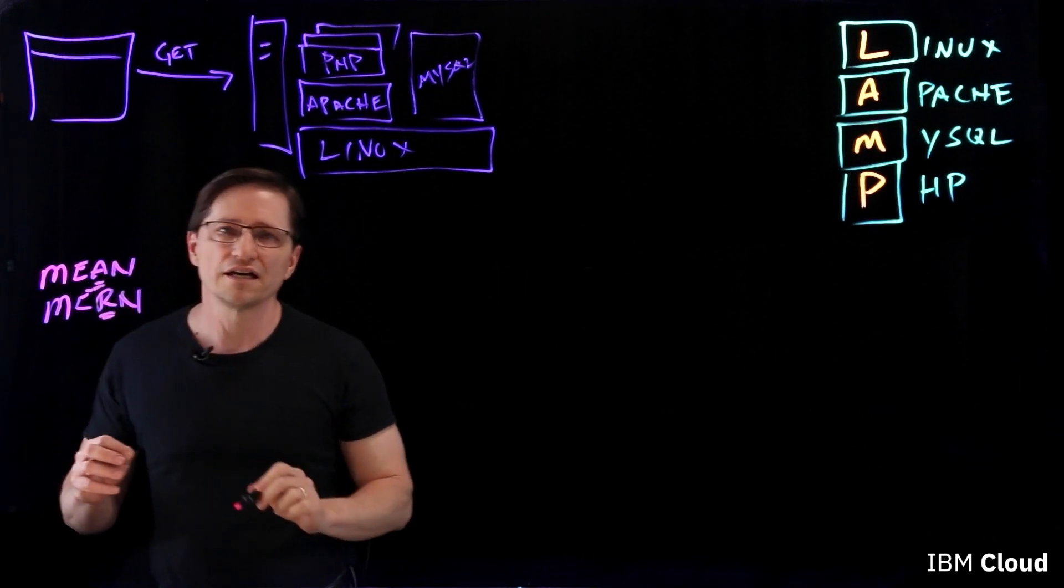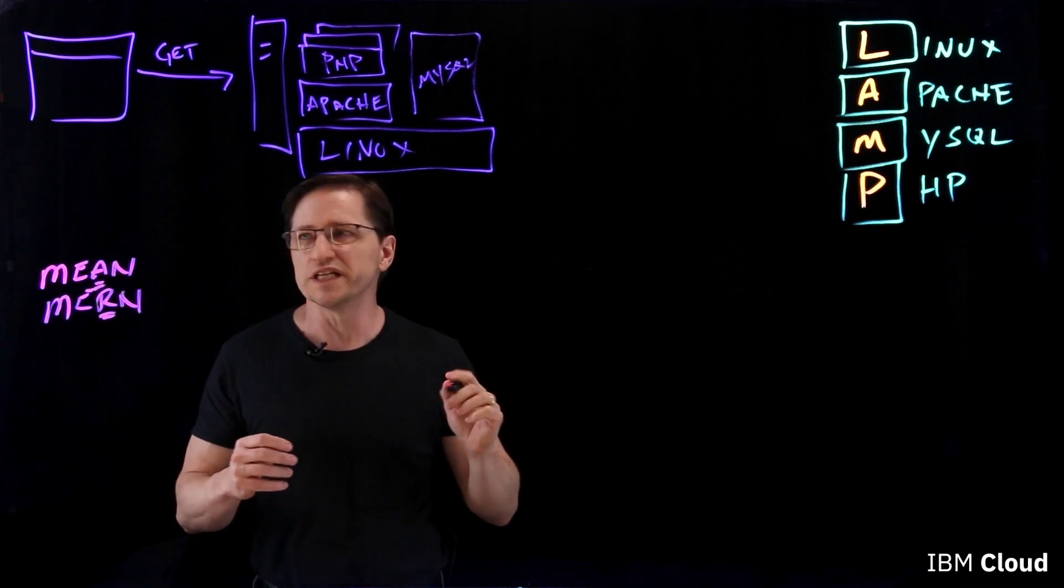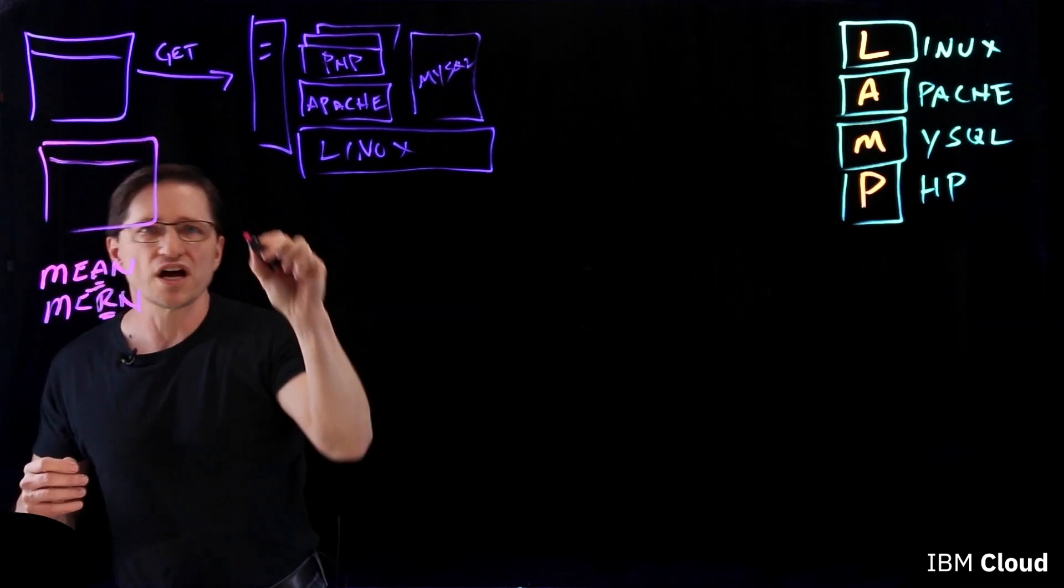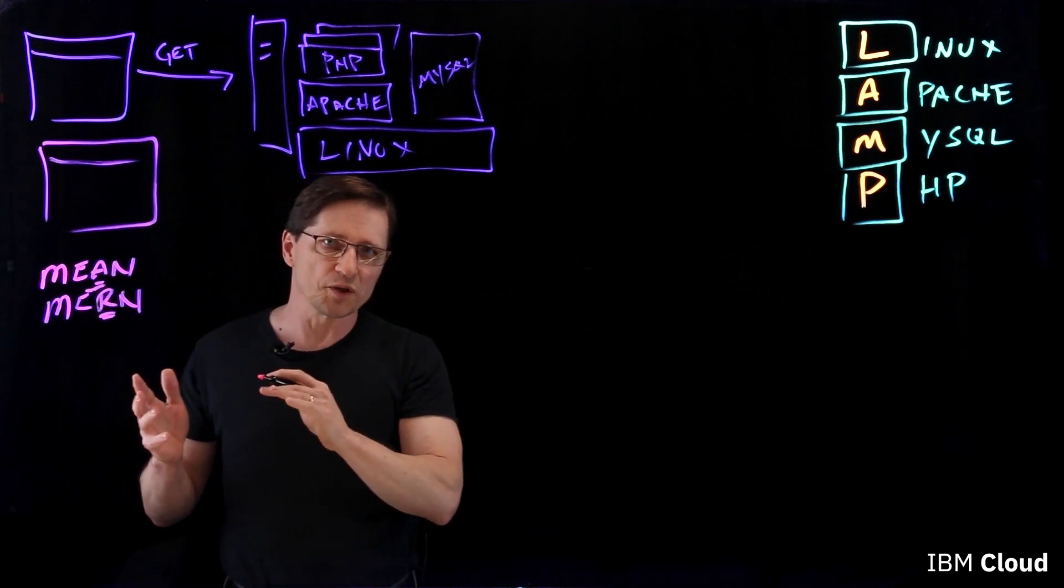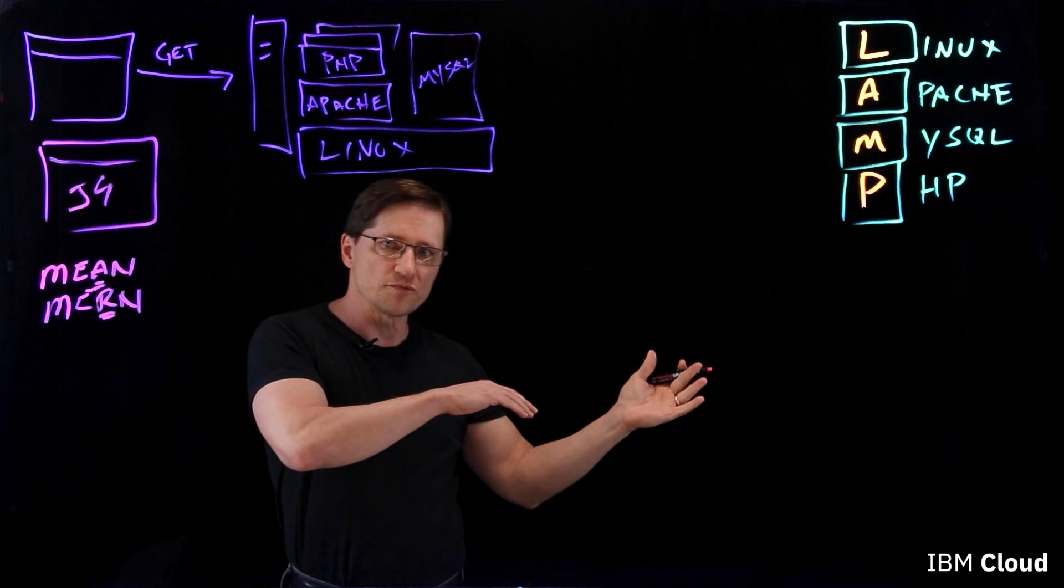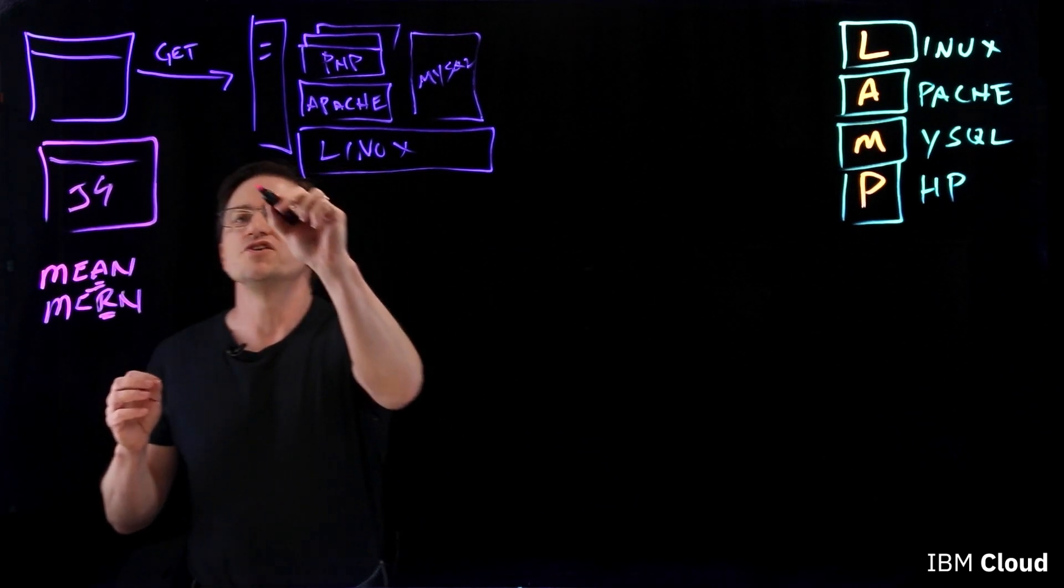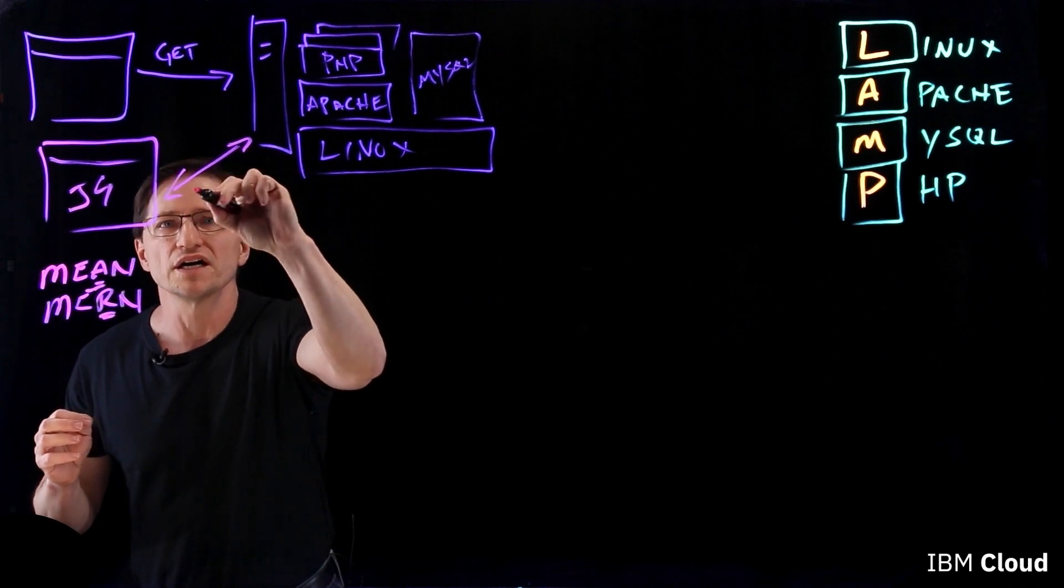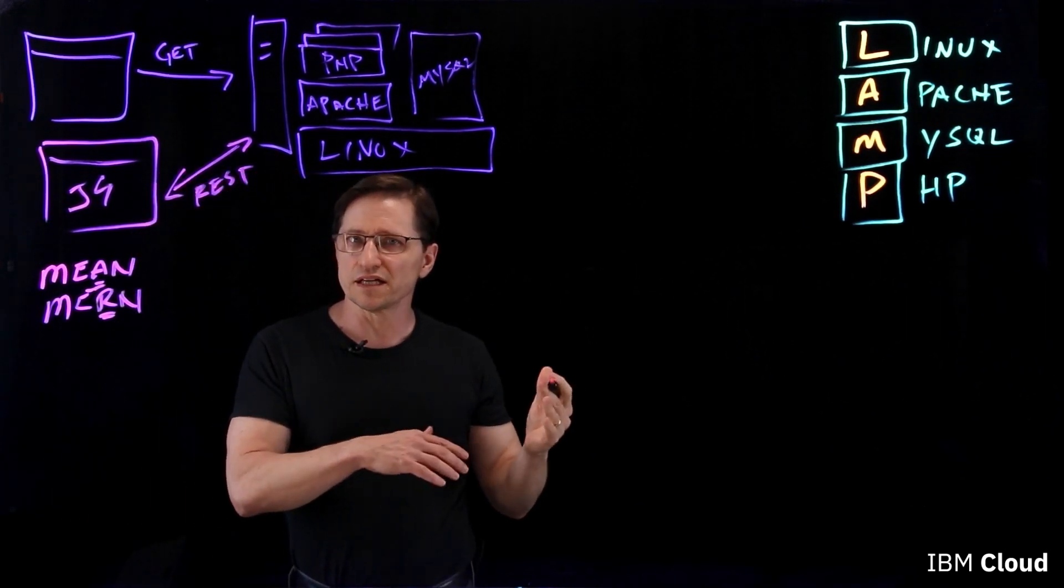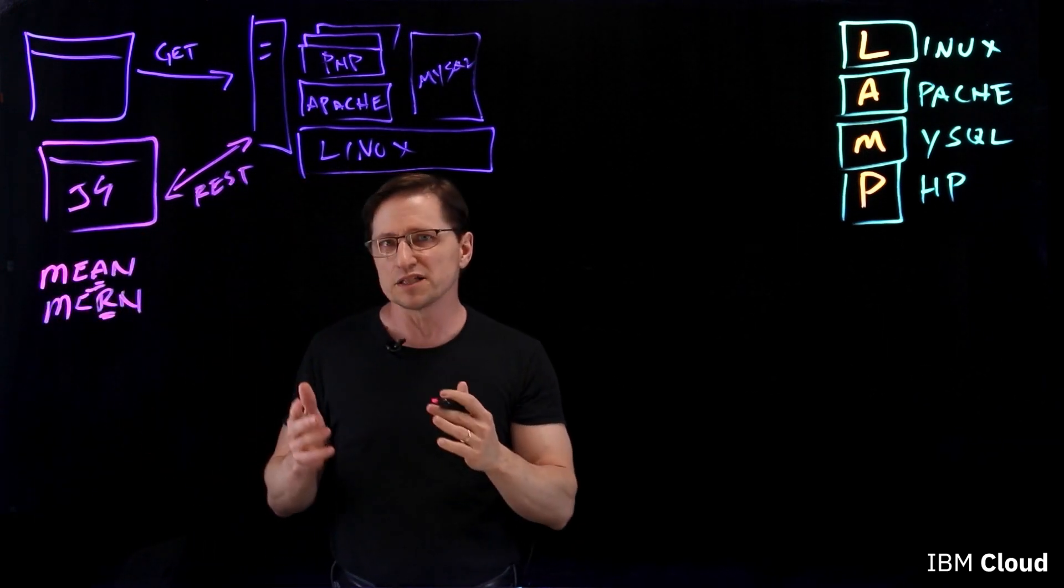The R and the A. The A is for Angular, and the R is for React. And React and Angular are JavaScript that's installed on the browser. And then instead of requesting a page from the server and getting back all the content in one chunk, it uses REST APIs. They simply ask for the data, and then the data is formatted on the page on demand.